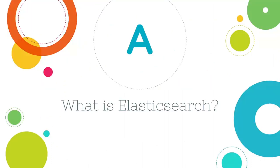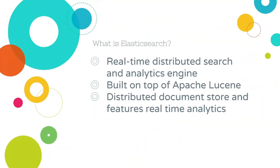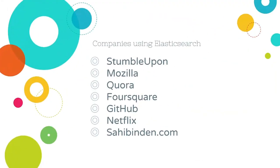In this lecture, I will give you a brief introduction to Elasticsearch. I will try to answer questions such as what is Elasticsearch, which companies use it, and how we communicate with our Elasticsearch server. Elasticsearch is a real-time distributed search and analytics engine. It is built on top of Apache Lucene, which is a full-text search engine. It is a distributed document store and features real-time analytics. Companies like StumbleUpon, Mozilla, and Quora, among many other big companies, use Elasticsearch.